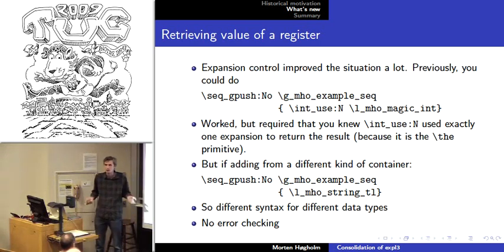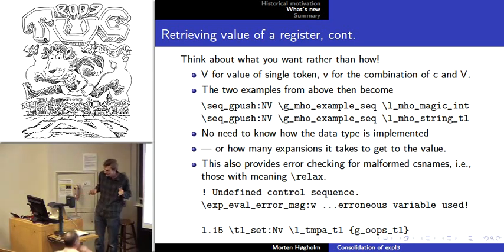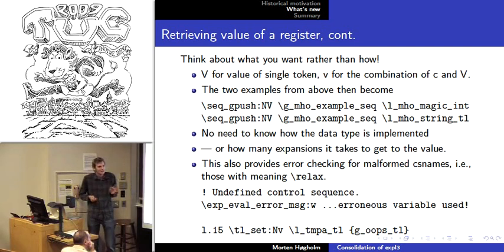That's impossible or at least very difficult. So we came up with a different solution, which is very simple. Think of what you want rather than how you want it. I just want the value of a register. Fine, I'll use V, that was the difficult part choosing the correct letter. And then I just want the value of this register. So this relieves me from having to know how we implemented it and first and foremost how many expansions it took to get there.